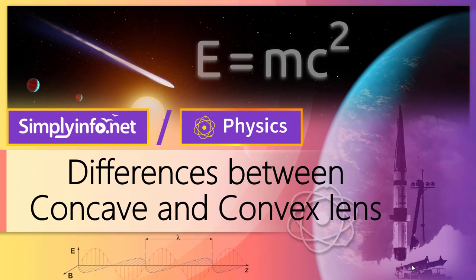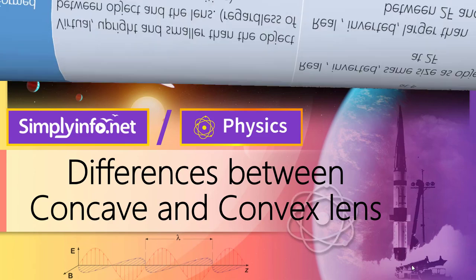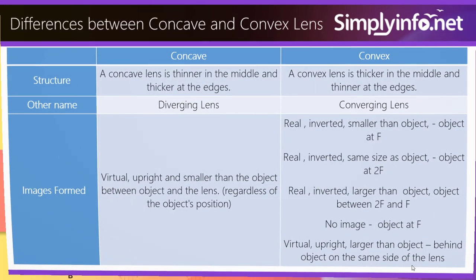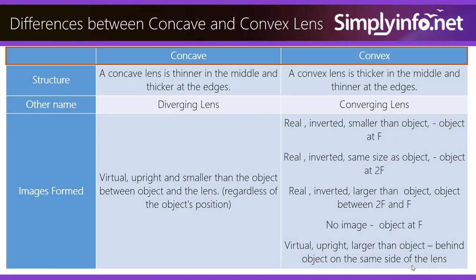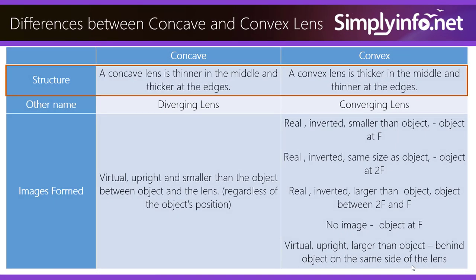Differences between concave and convex lens. A concave lens is thinner in the middle and thicker at the edges, whereas a convex lens is thicker in the middle and thinner at the edges.